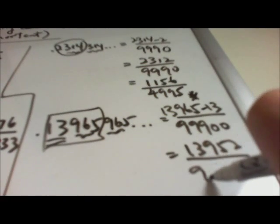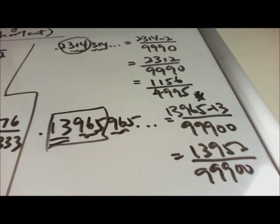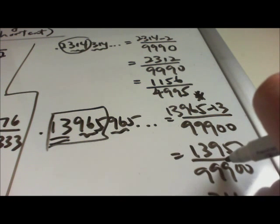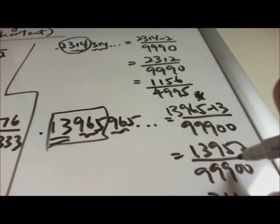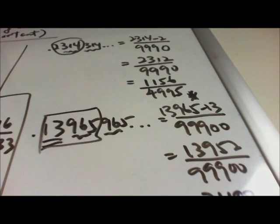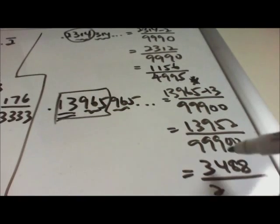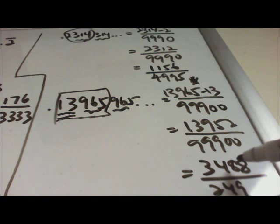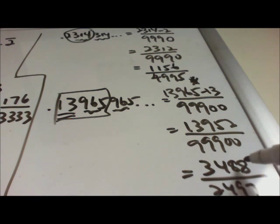You have 13952 over 99900. Then you divide by 4. Working through the division: 4 into 13952 gives 3488, and 4 into 99900 gives 24975.